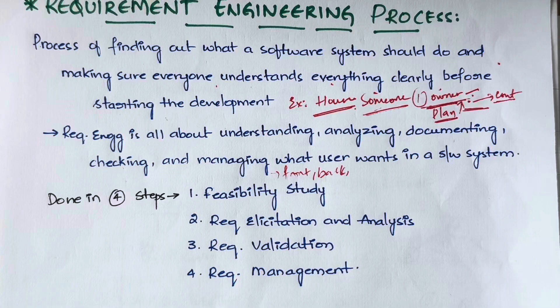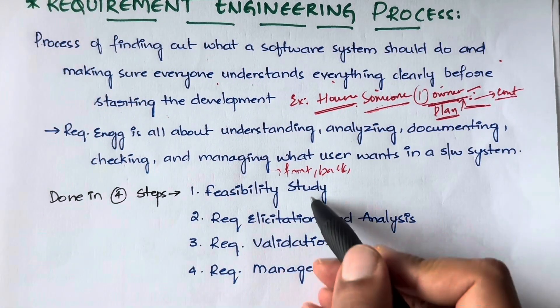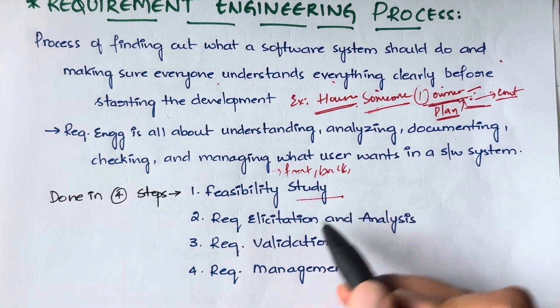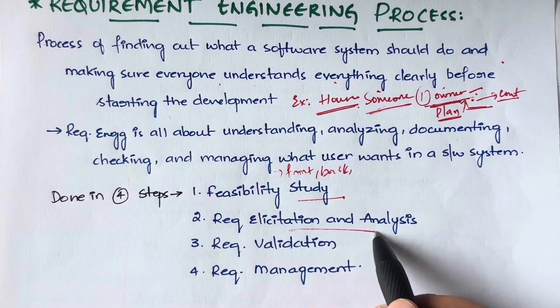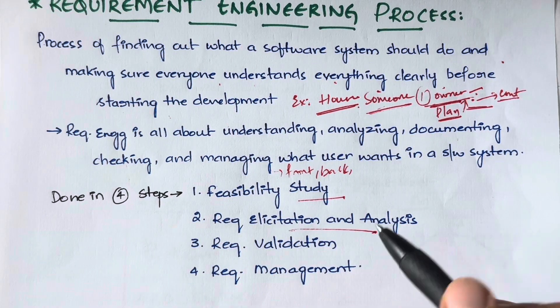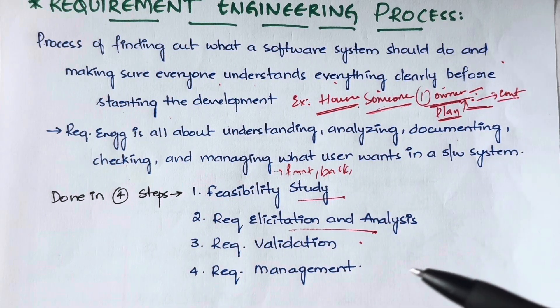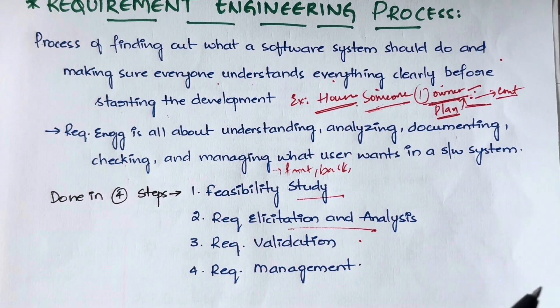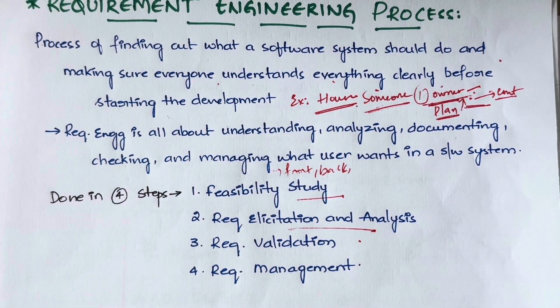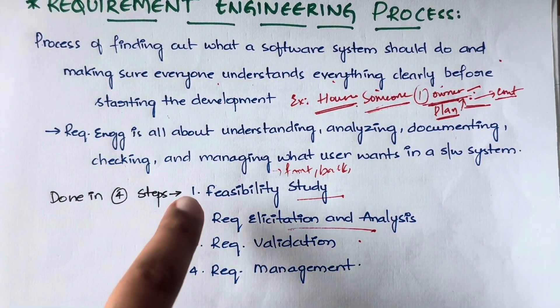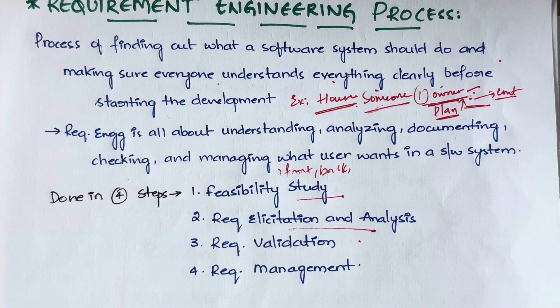In this requirement engineering process, there are four simple steps to break it down further: first is a feasibility study, second is requirement elicitation and analysis, third is requirement validation, and fourth is requirement management. I'll explain each of these in detail in the next coming videos.